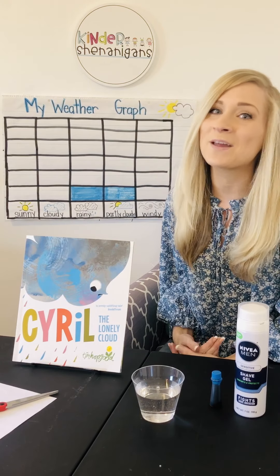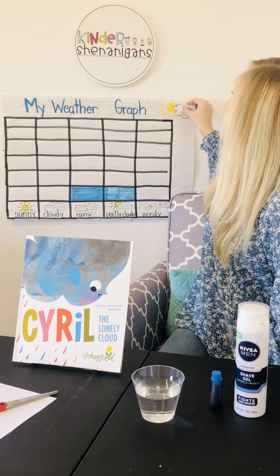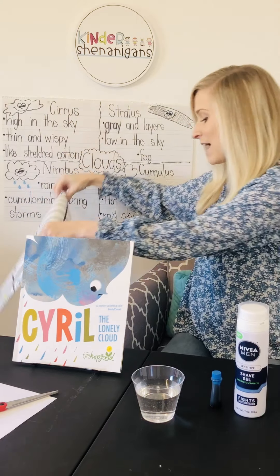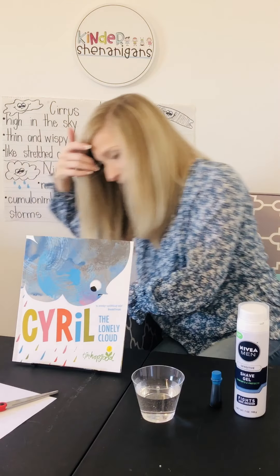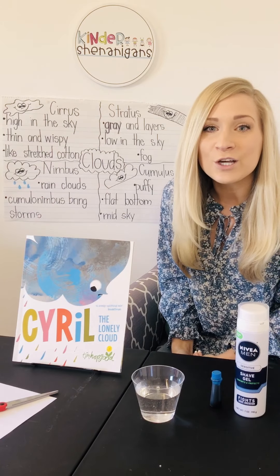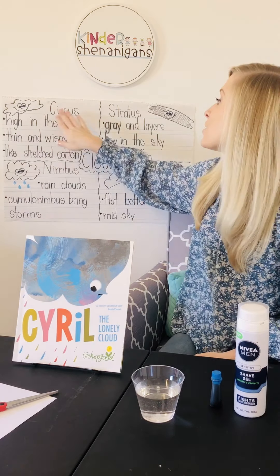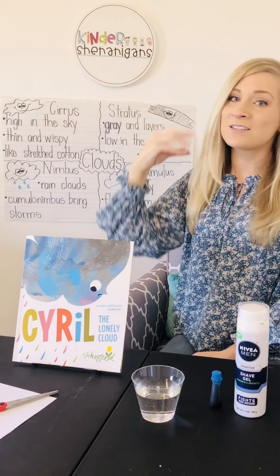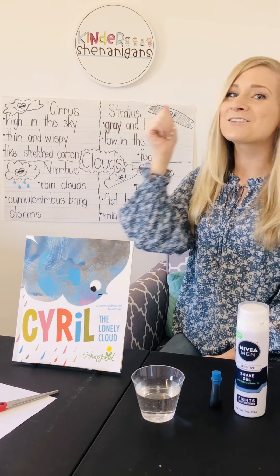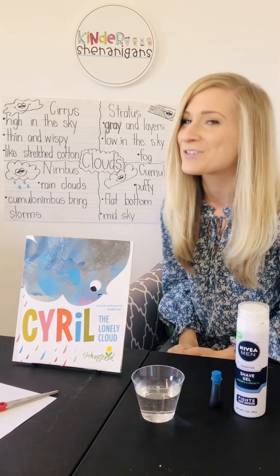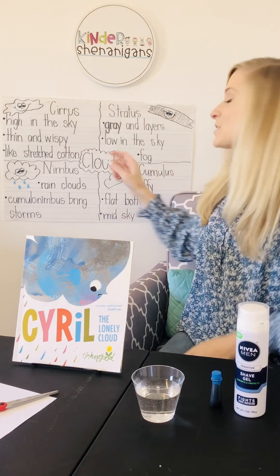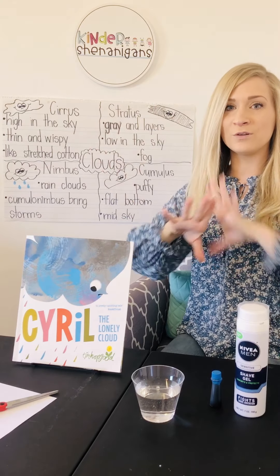I can't wait to continue our weather graph. Since we're finished talking about our weather graph for now, I'll set it aside and get ready to learn more about clouds. Earlier, we learned about four different kinds of clouds — we talked about the cirrus clouds, the stratus clouds, the nimbus clouds, and the cumulus clouds.